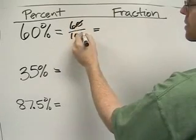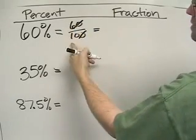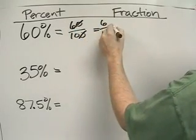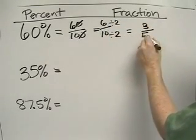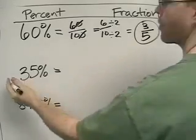A nice easy way to reduce is to cross off the zeros. Now you get 6 over 10, and then divide by 2, the numerator and the denominator. You get 3 fifths.